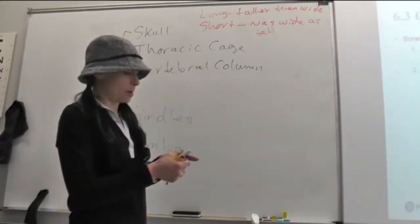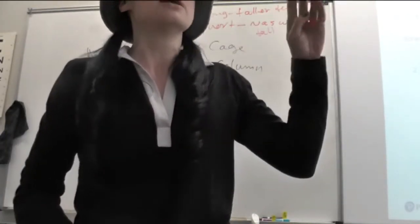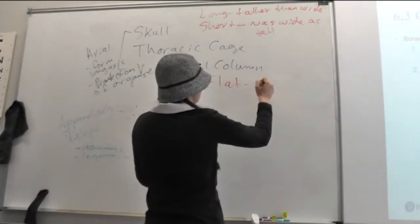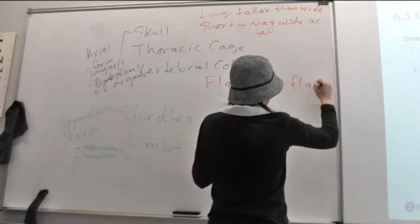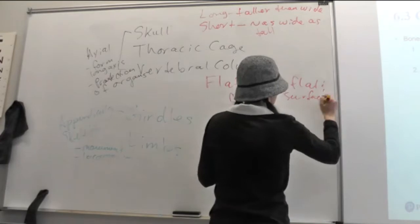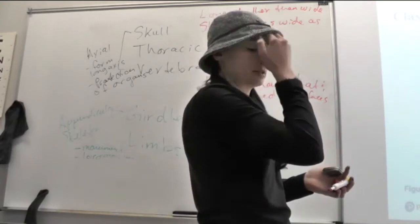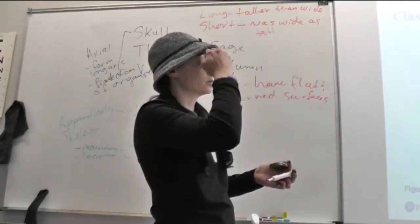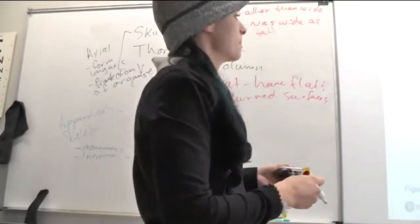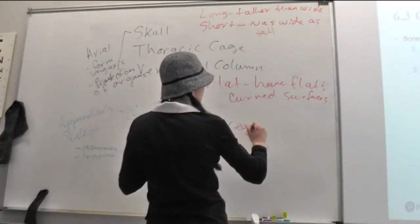Flat bones are bones that are, have a flat surface and they also have a curved surface. So, like the bones of our skull. So, the flat bones have flat and curved surfaces. So, like my frontal bone is definitely a flat bone. And if I were to look on the back side of it, I have a nice fossa that can cradle my frontal lobe of my brain.